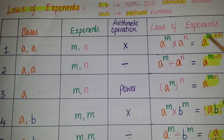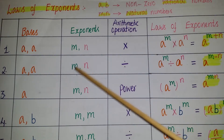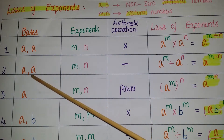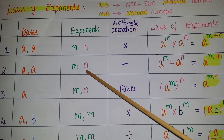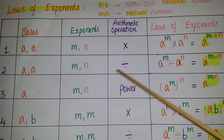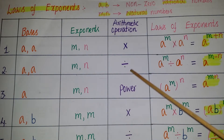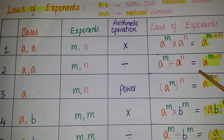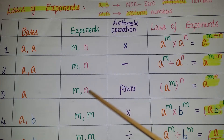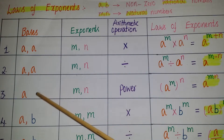The second law: if the bases are the same (a, a) and the exponents are different (m, n) and we divide the powers, then a to the power of m divided by a to the power of n is equal to a to the power of m minus n. Here we are subtracting the exponents.